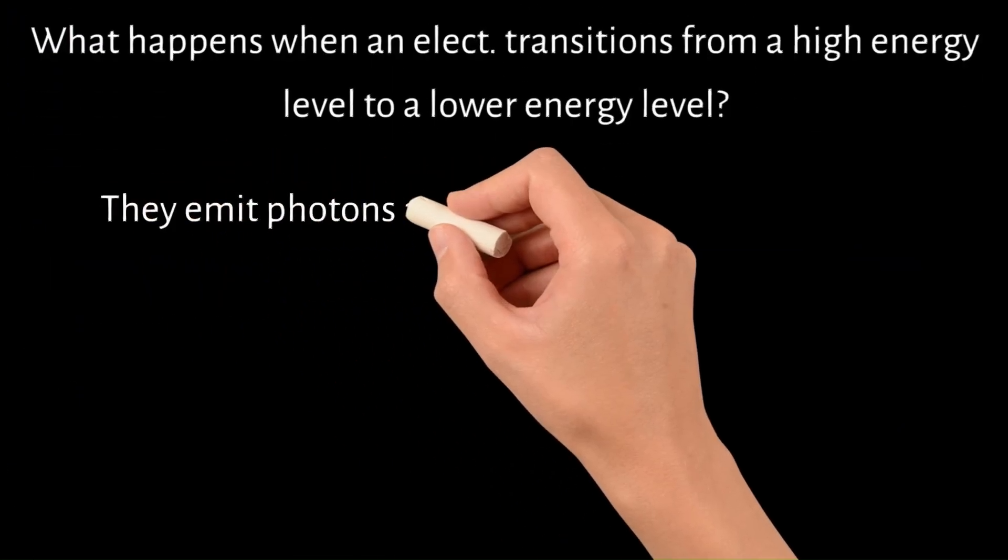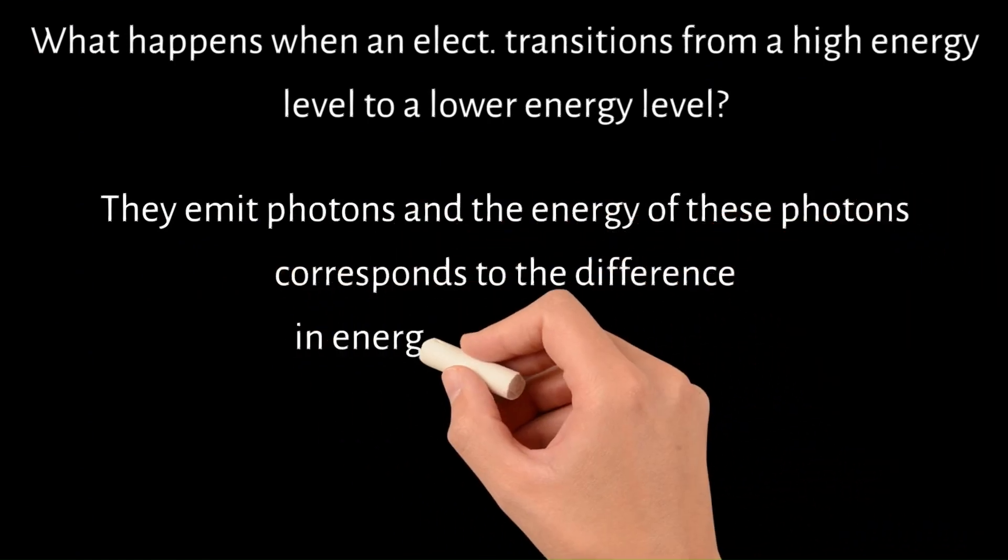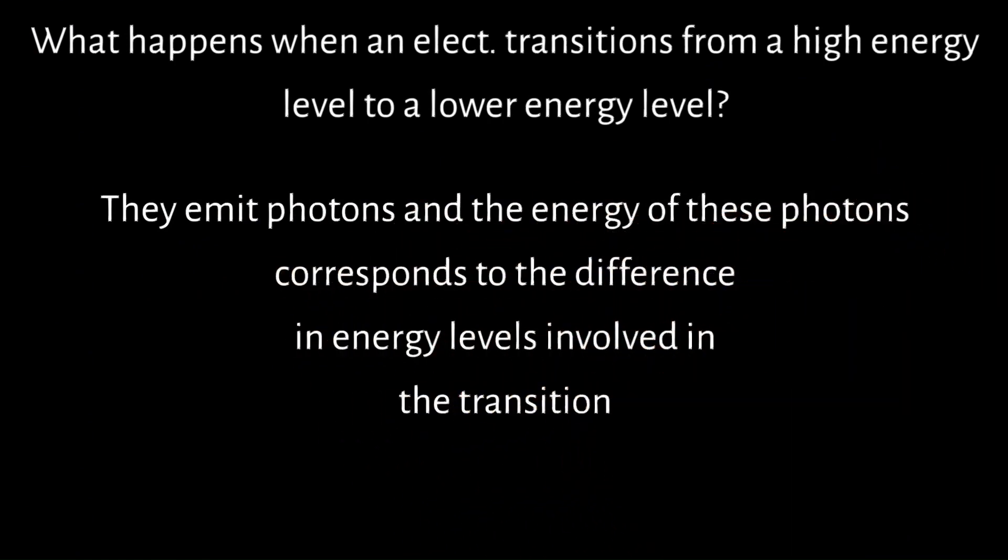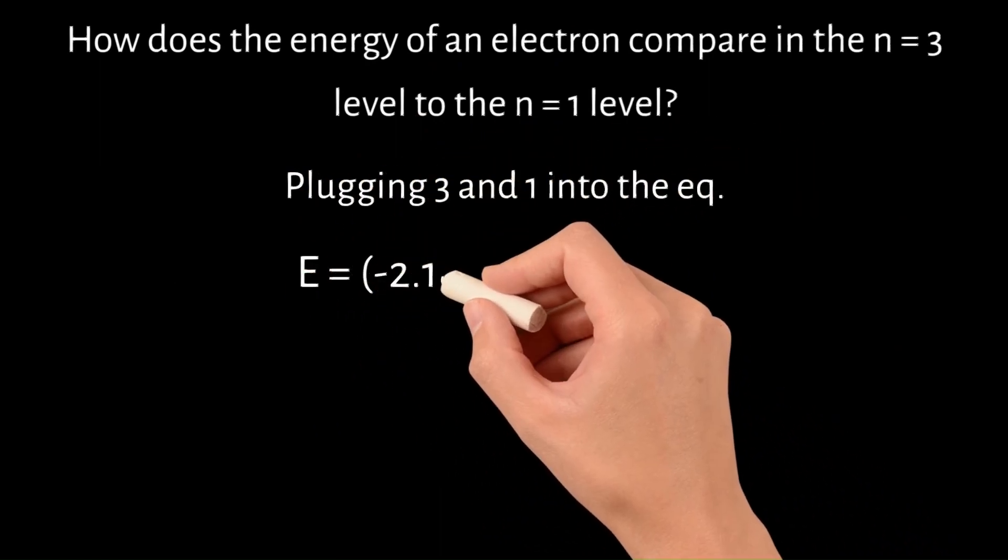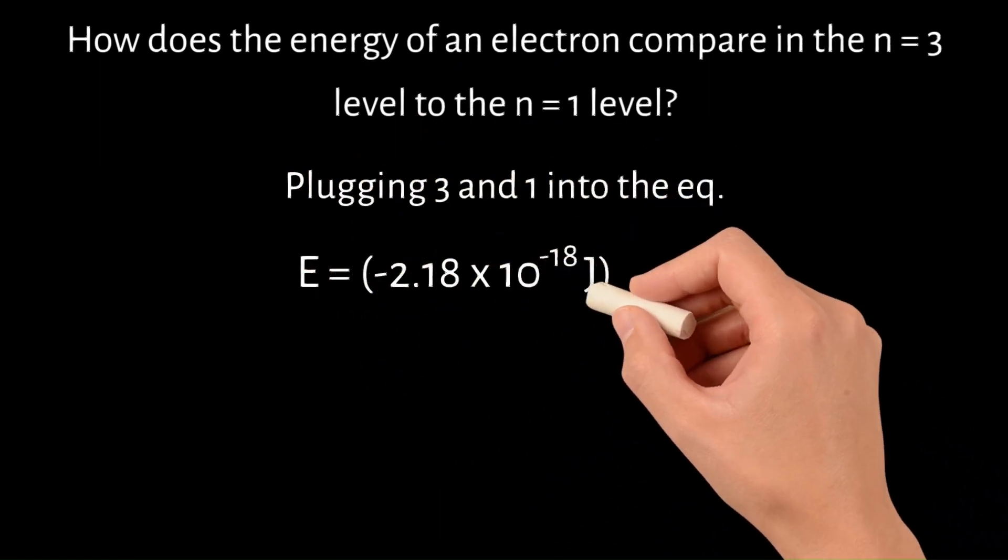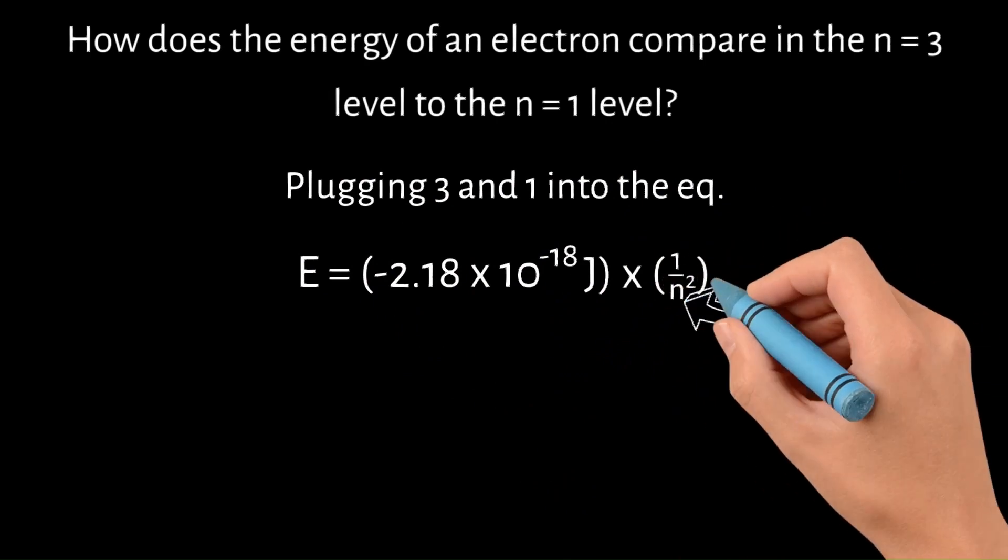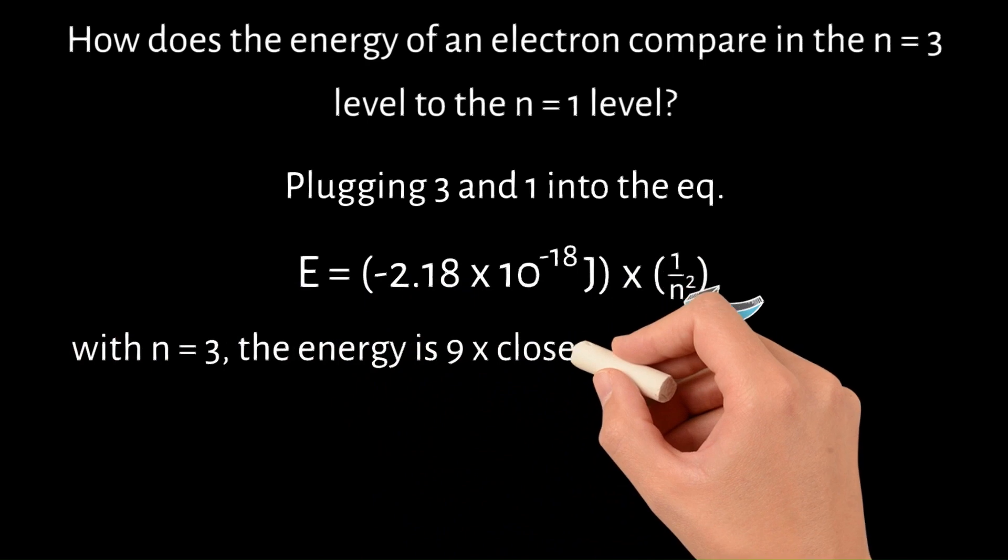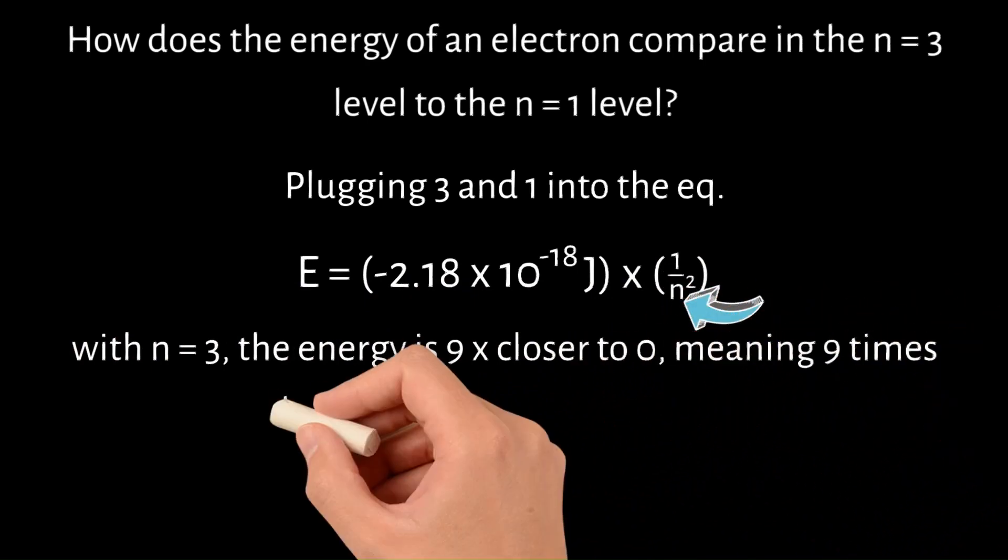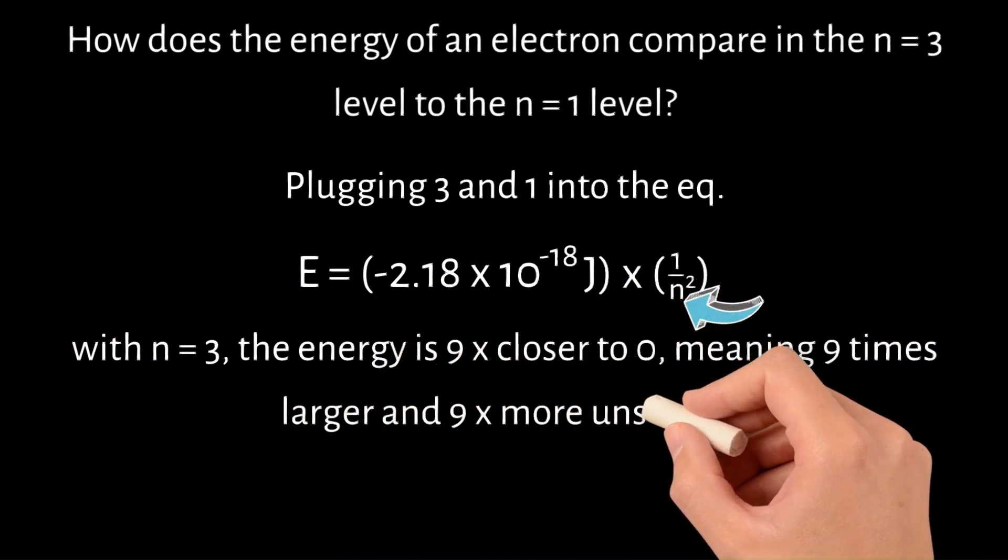They emit photons, and the energy of these photons correspond to the difference in energy levels involved in the transitions. Plugging 3 and 1 into the equation of E equals negative 2.18 times 10 to the negative 18th joules times 1 divided by n squared for n, you can see that with n equals 3, the energy is 9 times closer to 0, meaning that it is 9 times larger and 9 times more unstable.